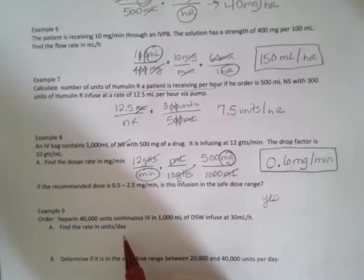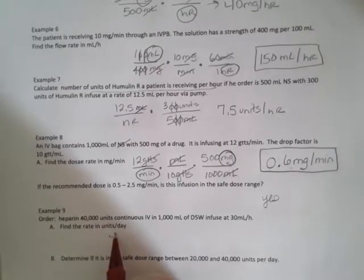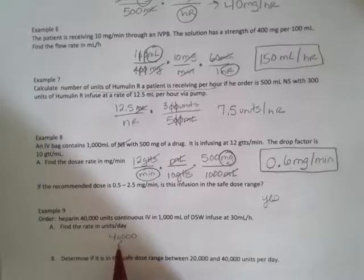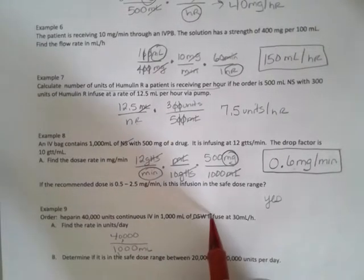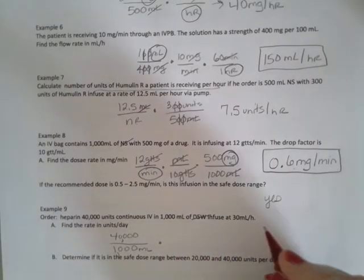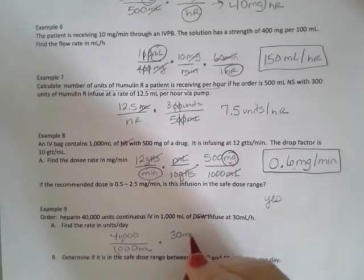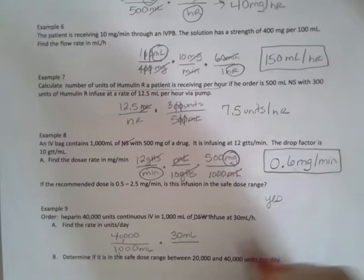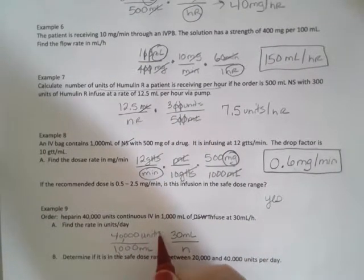In example nine, we're back to heparin. We're going to have 40,000 units in 1000 milliliters D5W. We're going at 30 milliliters per hour. I'm going to put my 30 milliliters in the numerator. My milliliters are going to cancel per hour. They want units. This is the units.